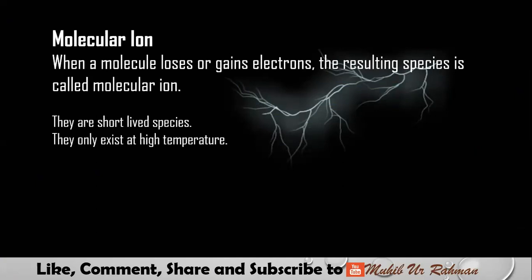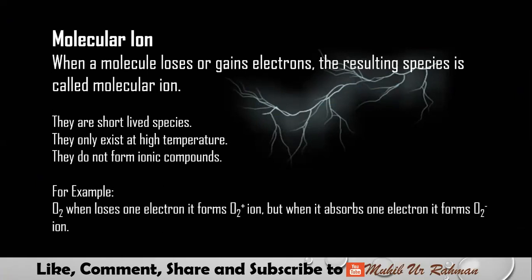Electrons release gives positive charge, electrons gain gives negative charge. These are short-lived species, very unstable, existing only at high temperature. Ions are found in daily life examples we'll discuss in chapter 4. Positive and negative ions combine electrostatically to form compounds. Molecular ions are not compounds - they exist only at high temperature. When oxygen molecule loses an electron, it gets positive charge. When it gains an electron, negative charge. Similarly, CH4 molecule can lose or gain electrons to form molecular ions.